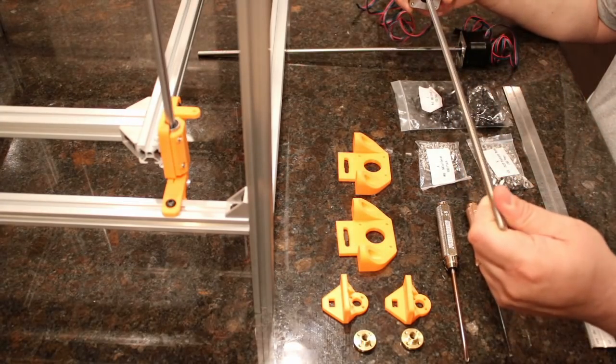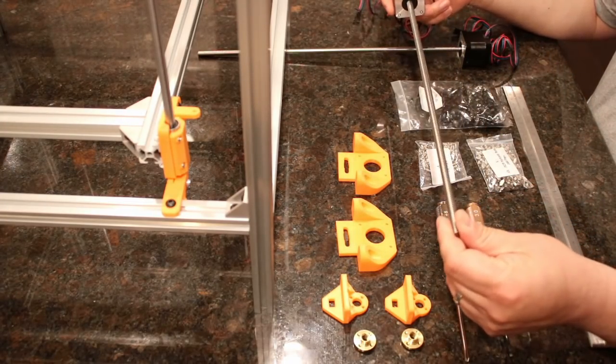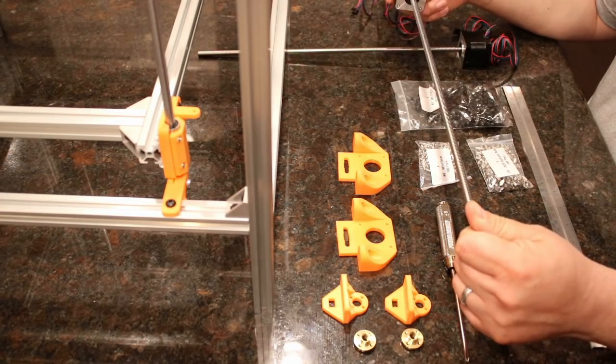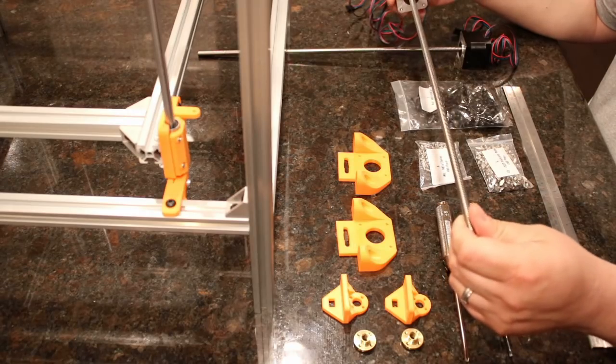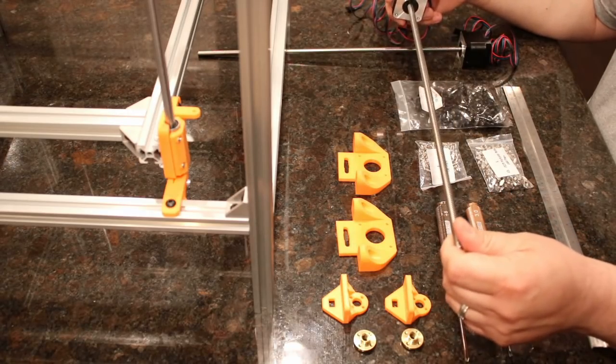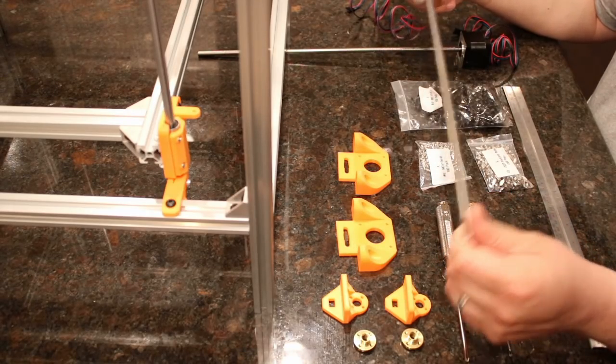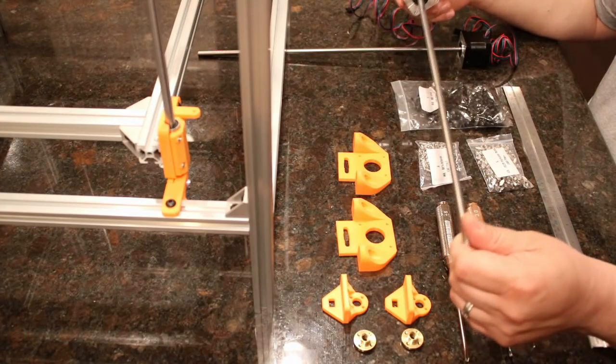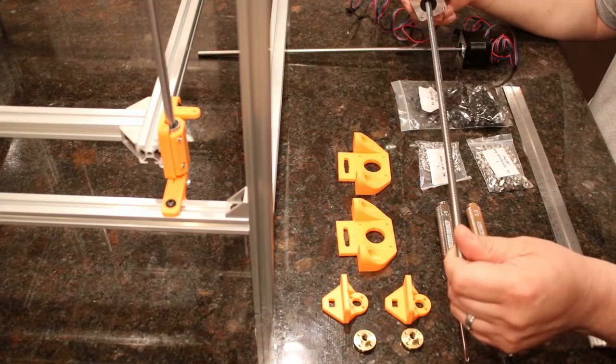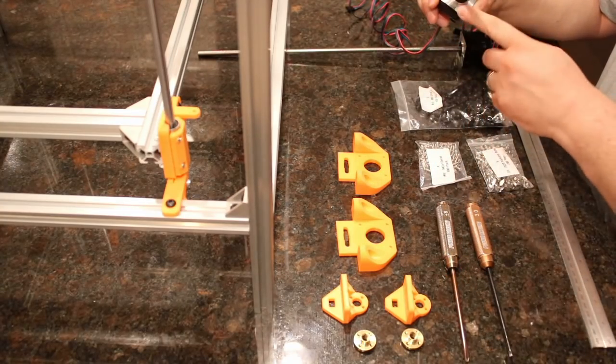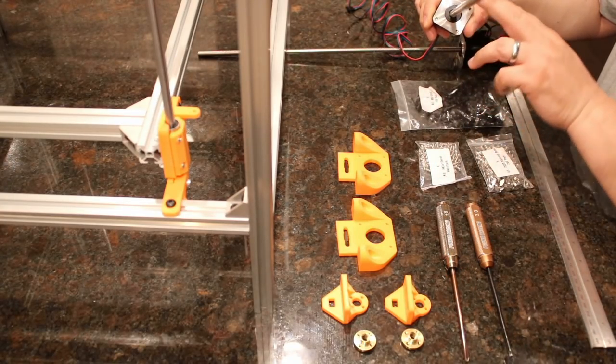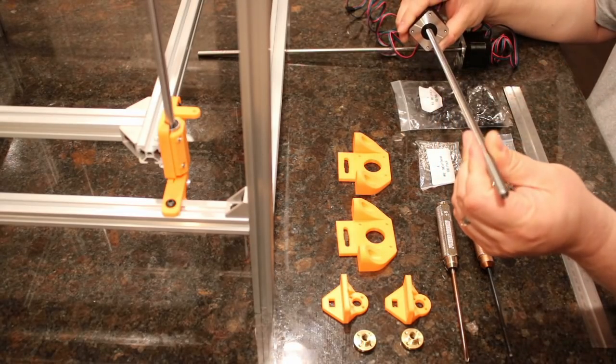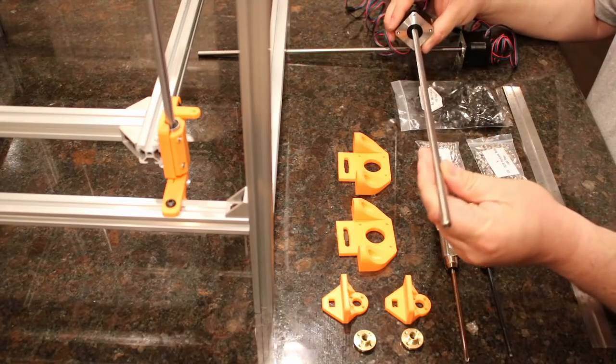These are NEMA 17 motors that have integrated lead screws. Now for a while, these were considered kind of a premium option, but the price on these motors have dropped recently, and I really urge you guys to look for these when you want to build a printer. It gives you a much more accurate drive system for your Z-Axis. Now you can also build this with a normal NEMA 17 motor, a coupler, and an 8mm lead screw, or an 8x8 lead screw, and that'll work okay. However,